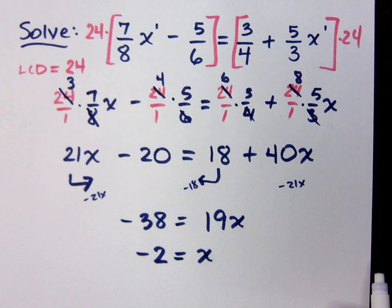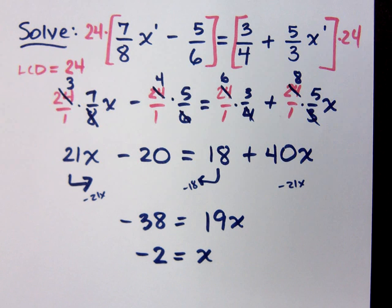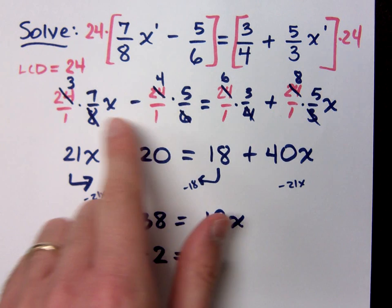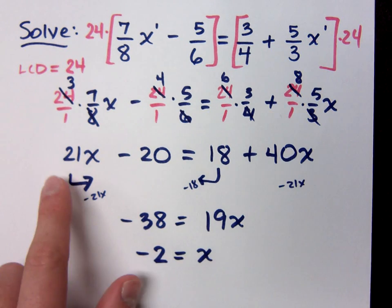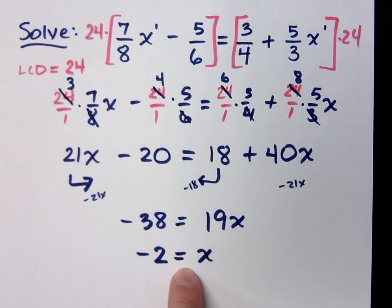That was almost too nice, wasn't it? Could you have worked this whole problem keeping all the fractions intact? Yes. But why would you do that? Notice that as soon as I multiplied everything times 24 and reduced, I got a nice linear equation that was super easy to solve, and then I was done. Do you all agree?